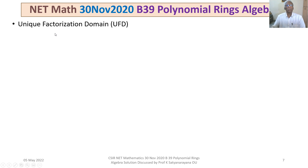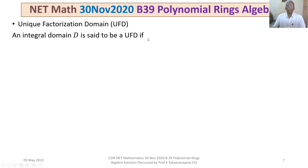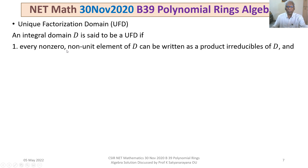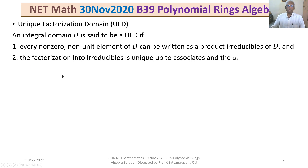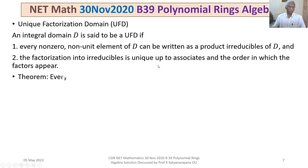Now we recall what a UFD is. An integral domain D is said to be a UFD if every non-zero, non-unit element of D can be written as a product of irreducible elements of D, and this factorization is unique up to associates and the order of factors. We have a theorem: every PID is a UFD. Since Q[X] is a PID, it is therefore a UFD, which is option 4.